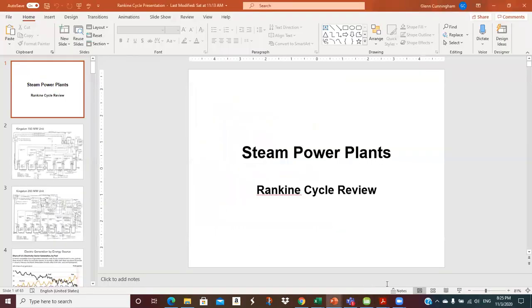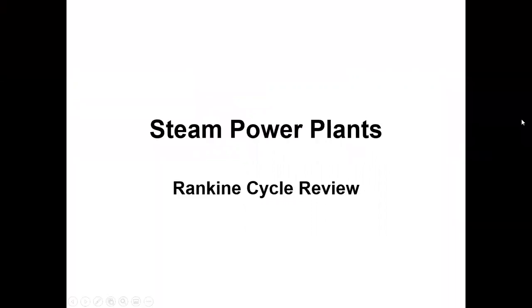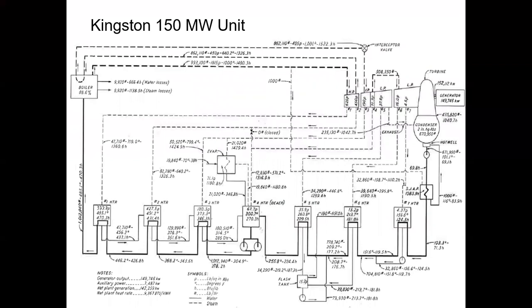So let's jump to the slides here. This is the Rankine cycle review. This is a 150 megawatt utility scale generating unit — the Kingston steam plant on beautiful Watts Bar Lake as you drive towards Knoxville. You can see the plant going towards Knoxville; it's on your left right about the Kingston exit, that's 352 I believe. Just to give you some idea of the level of complication that we see.